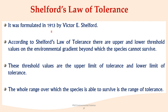Shelford's law of tolerance was formulated by Victor E. Shelford in 1913. According to this law, there are upper and lower threshold values. The upper threshold is the maximum level of an environmental factor — for example, temperature, moisture, or pH — that a species can survive; beyond this limit conditions become too extreme. The lower threshold is the minimum level a species can withstand; below this limit conditions are too harsh. The entire range over which the species is able to survive is called the range of tolerance, within which a species can survive, grow, and reproduce effectively.